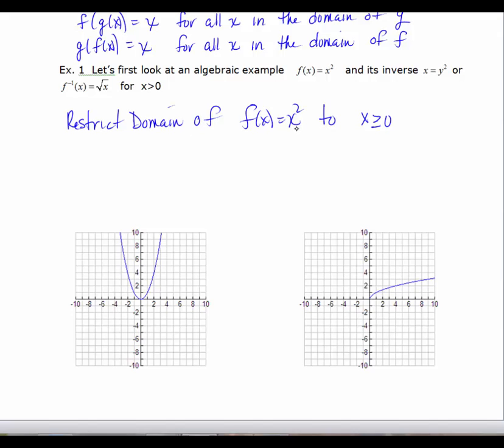So if we restrict it, the domain of f of x equals x squared to x is greater than or equal to zero, and we can include the equal sign here. We would just be focusing on one piece of this graph, which is this piece right here. And that would be considered one to one. And if we think of some ordered pairs that were on the original graph: 0, 0, 1, 1, 2, 4, if those ordered pairs are on the original graph, remember that when you graph an inverse, you just change the x's and y's, or interchange them.